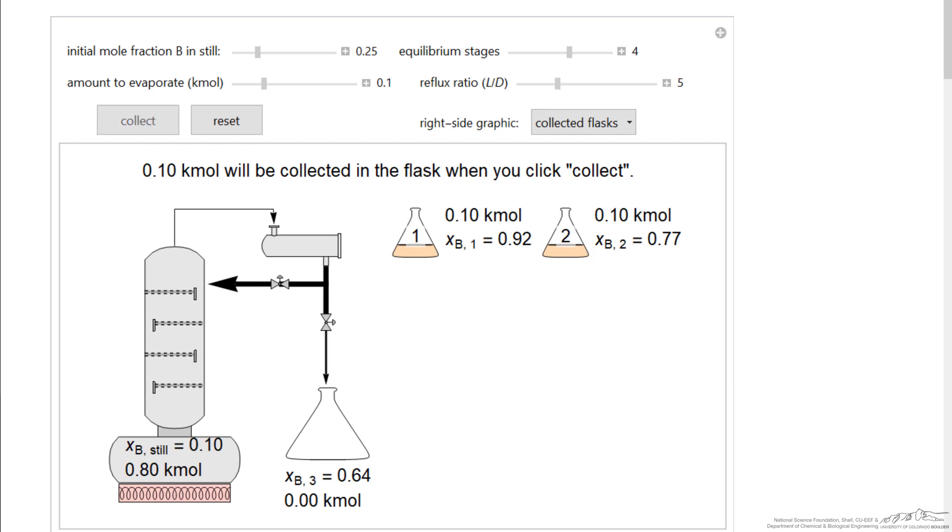We can continue doing that until we get down to two-tenths of a kilomole in the flask. Notice now we're dramatically decreasing the amount of B in the still. We've actually done a pretty good separation. The remaining liquid in the still is 96% of component A.